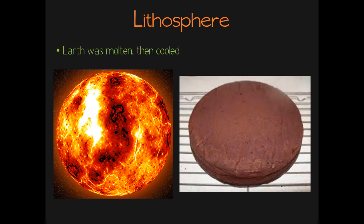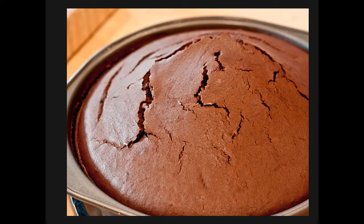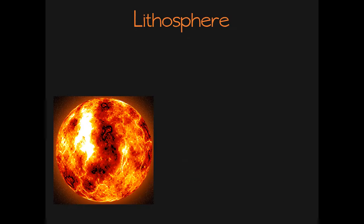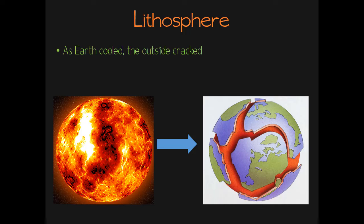If you've ever baked a cake that came out like this, sometimes as it cools, cracks form on the outer surface. The same thing happened to Earth. As Earth cooled and formed that hard, rocky lithosphere, it cracked into several huge chunks. We call these chunks of lithosphere tectonic plates. So the lithosphere is actually made of many massive chunks called the tectonic plates.